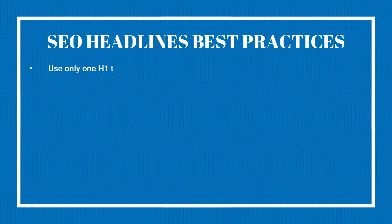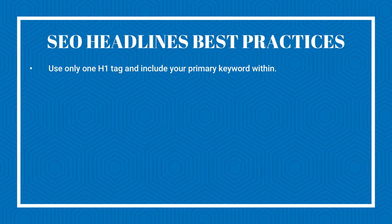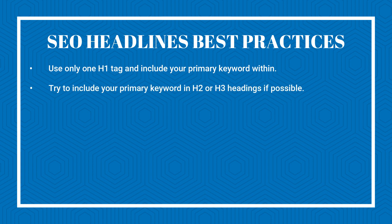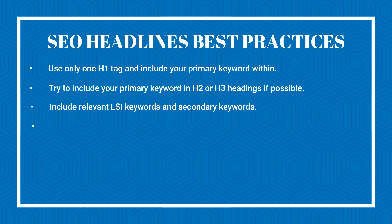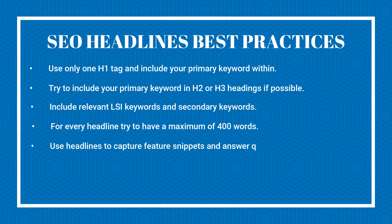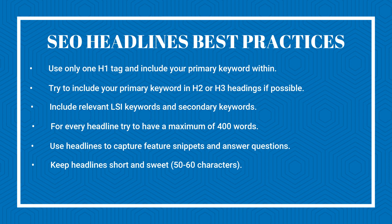Here are some best practices for SEO-friendly headlines: use only one H1 tag and include your primary keyword within it; if possible, try to include your primary keyword in H2 or H3 headings as well; include relevant LSI and secondary keywords in your subheadings; try to have a maximum of 400 words under each headline; use headlines to capture featured snippets and answer questions; and keep headlines short and sweet — between 50 to 60 characters or 7 to 9 words. If you want to learn more about producing SEO-friendly headlines, you can watch the linked video.